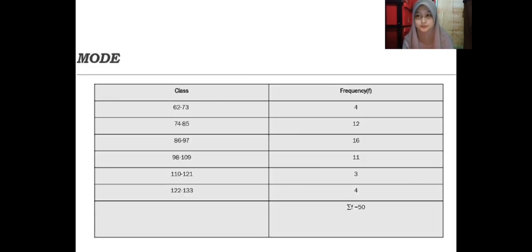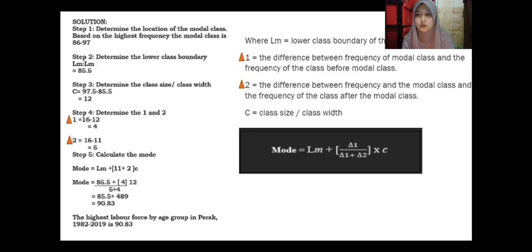To find the mode, step one: determine the location of the modal class. Based on the highest frequency, the modal class is 86 to 97. Step two: determine the lower class boundary, we get 85.5. Step three: determine the class width, we get 12.